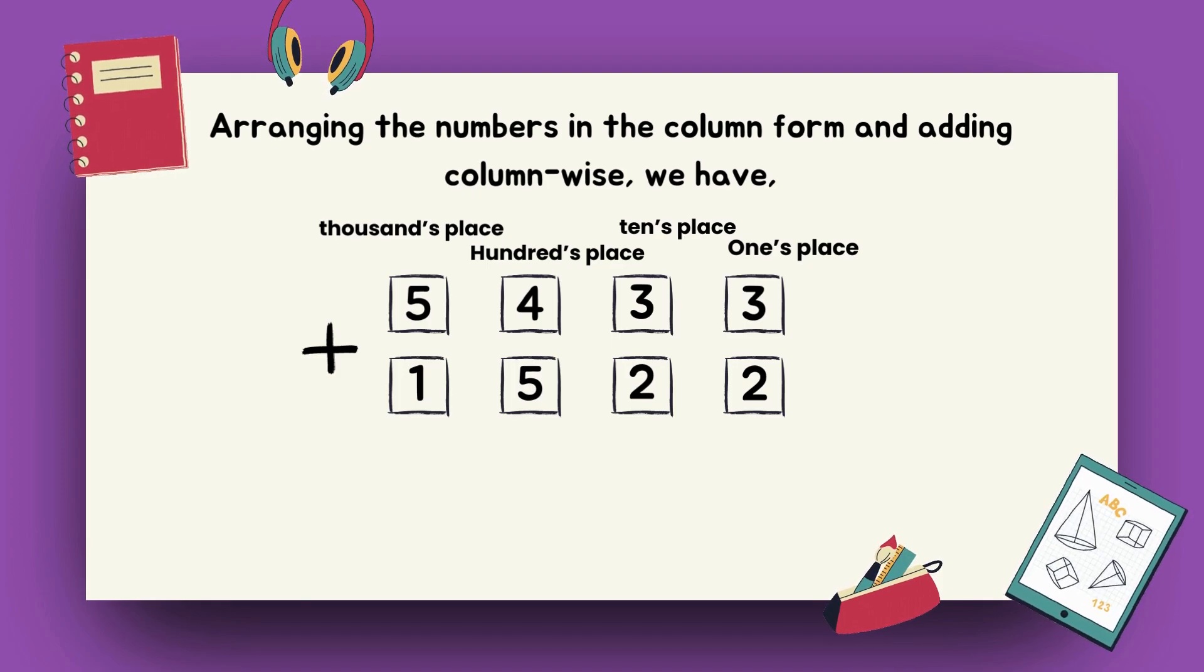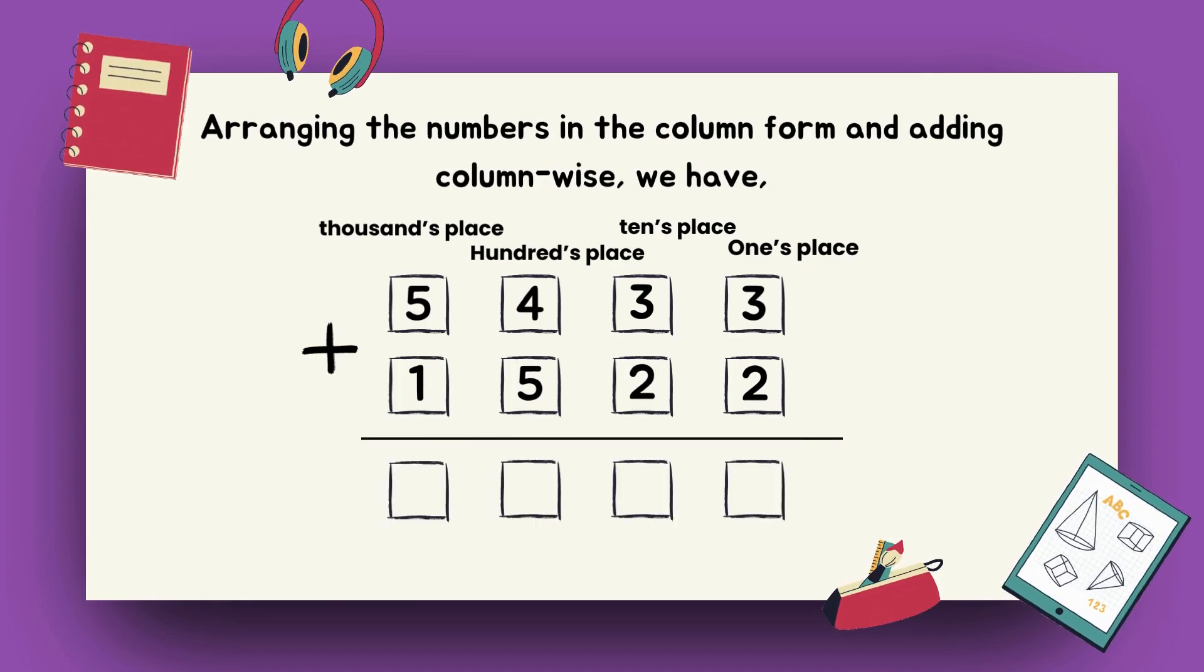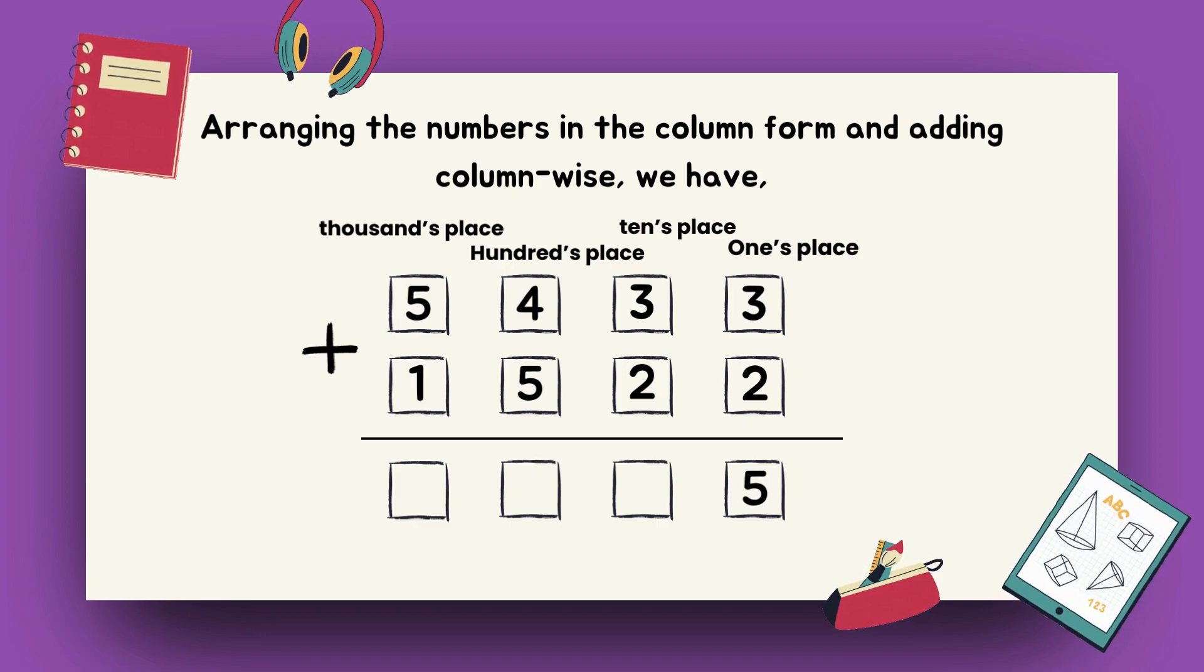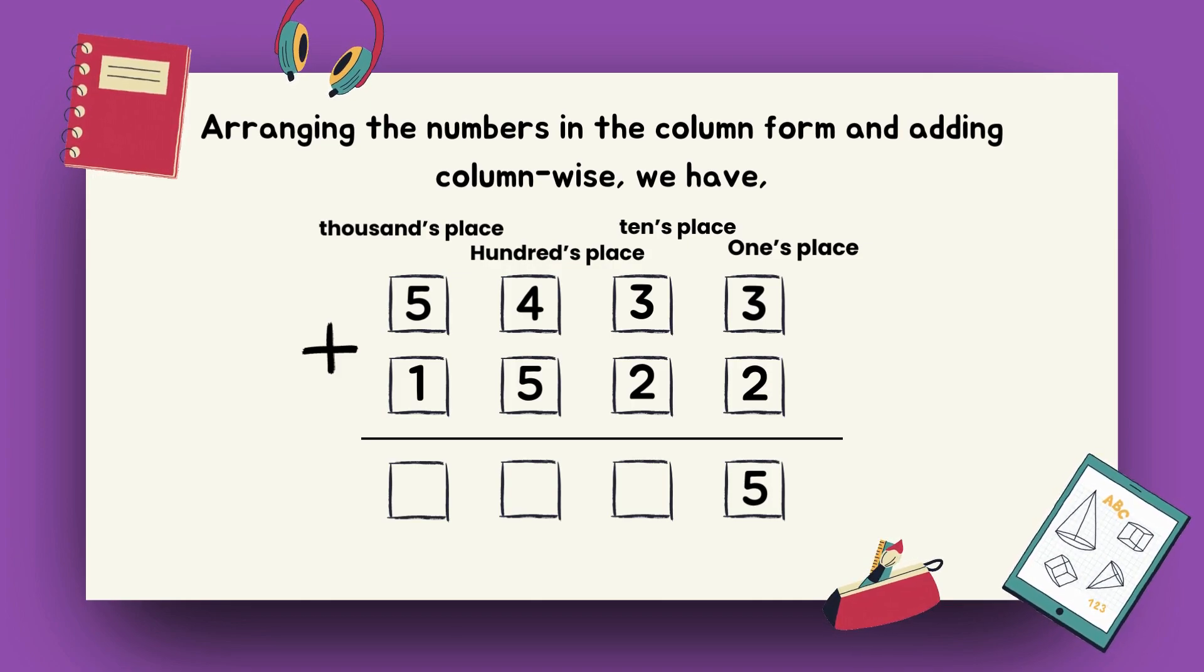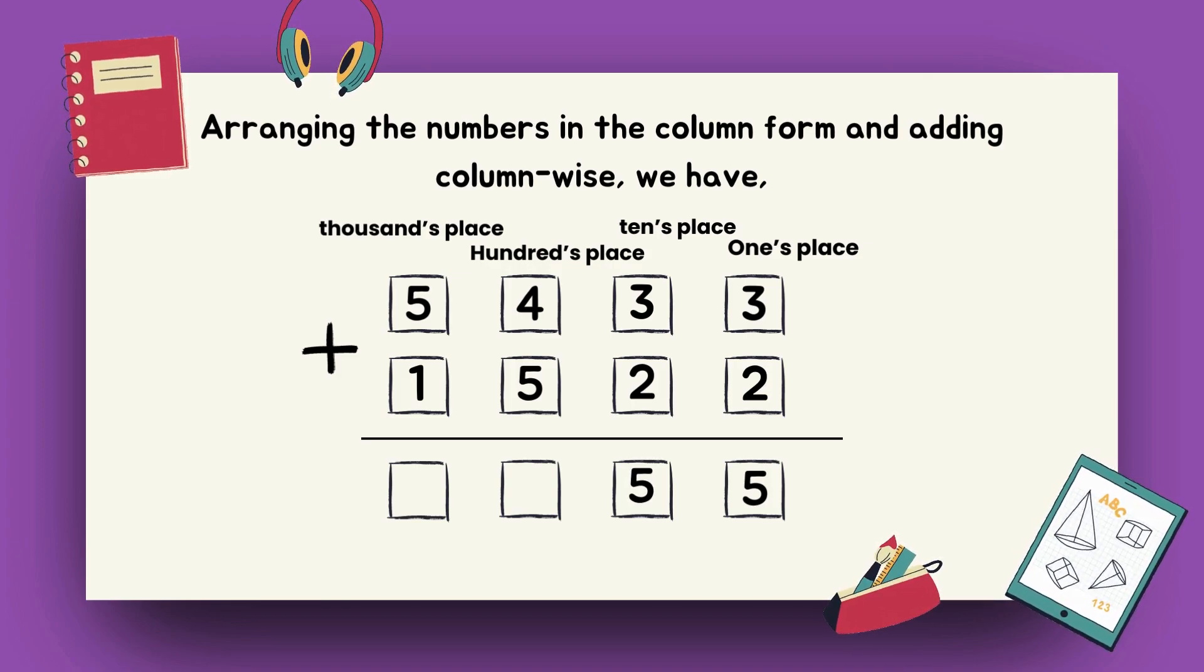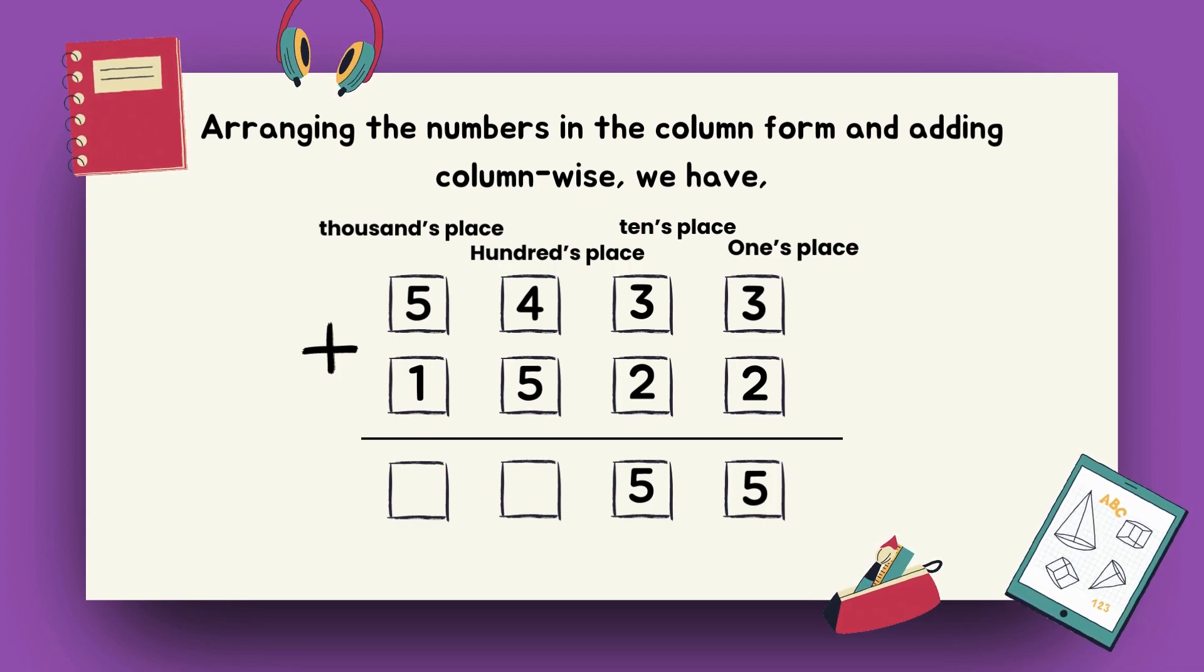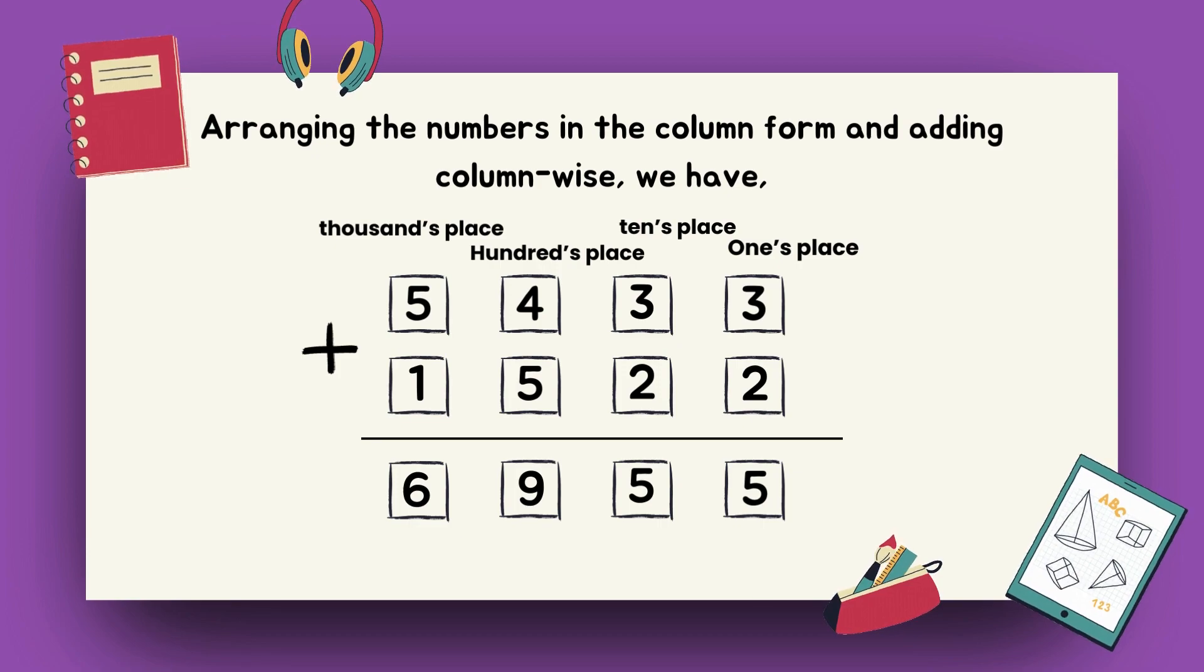5433 plus 1522. Let's start by adding digits at 1's place. 3 plus 2 becomes 5. Then moving to 10's place, 3 plus 2 becomes 5. Now, moving to 100's place, 4 plus 5 becomes 9. And for thousand's place, 5 plus 1 becomes 6.